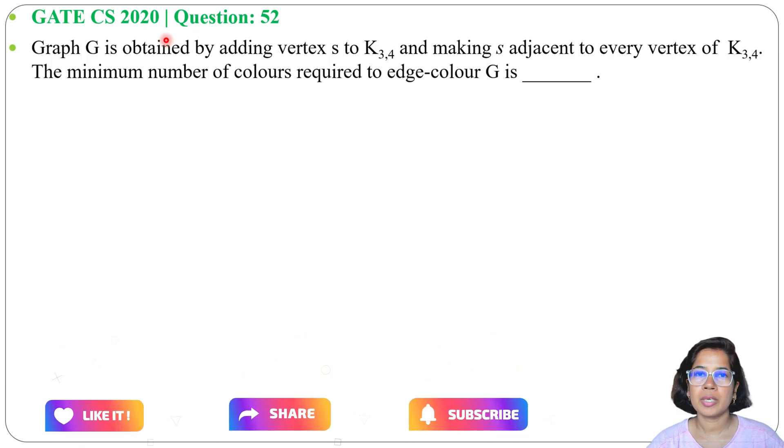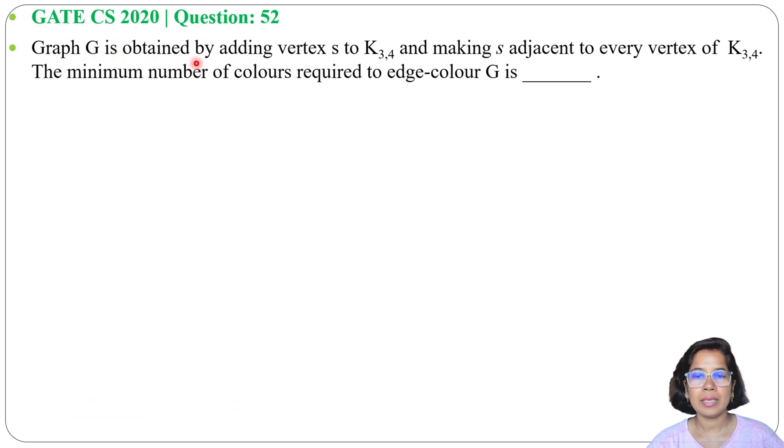Let's solve a previous graph theory question asked in GATE CS 2020, Question number 52. Graph G is obtained by adding a vertex S to K3,4 and making S adjacent to every vertex of K3,4. The minimum number of colors required to edge-color G is what we need to find.